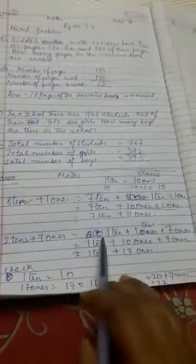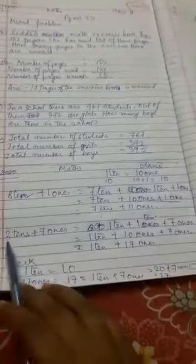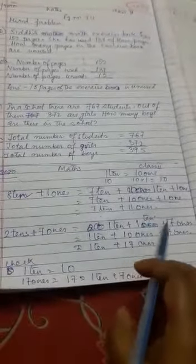So borrowing is like this. Here, 2 tens plus 7 ones. So now, 1 ten, 1 ten plus 7 ones.